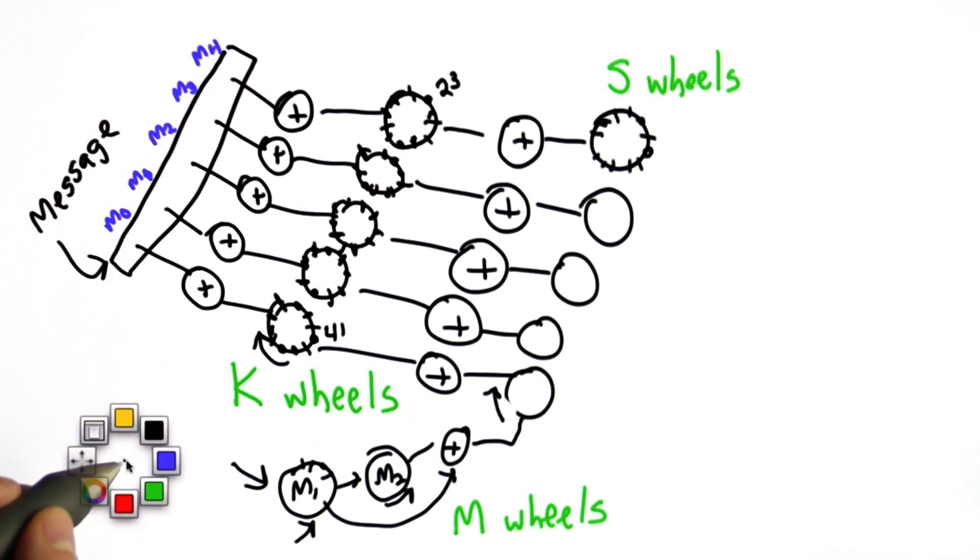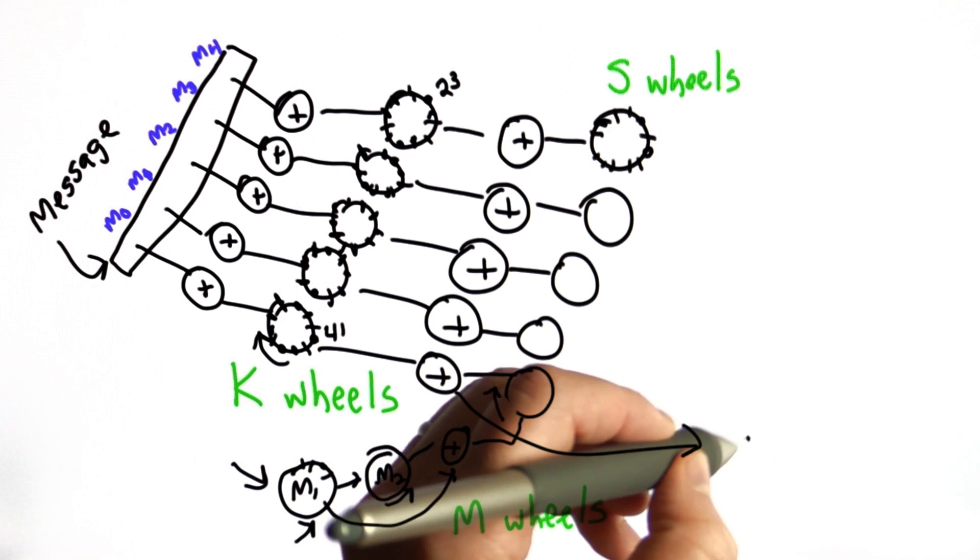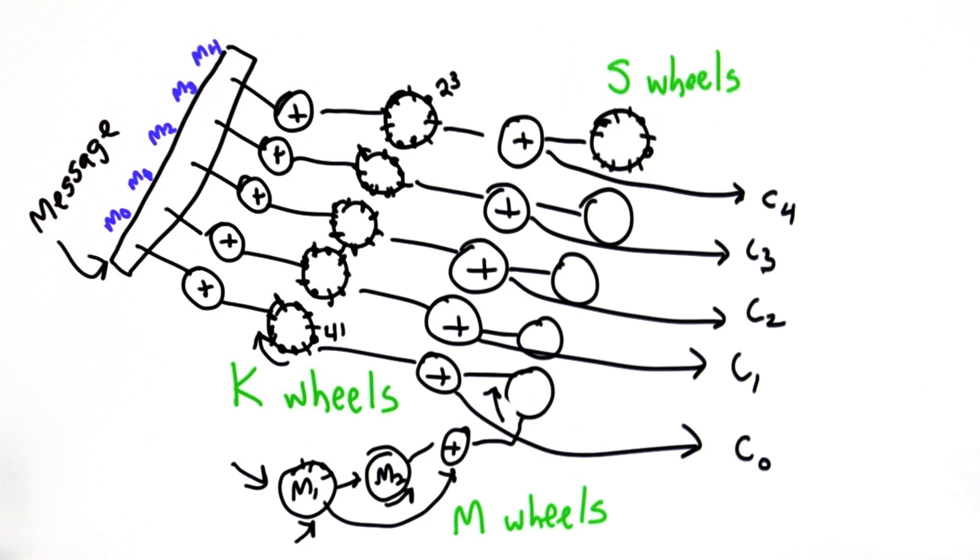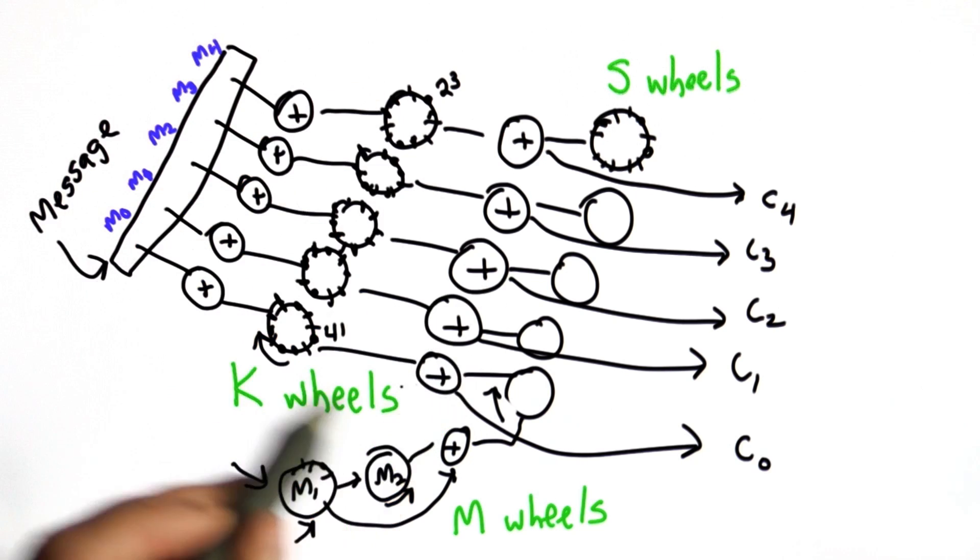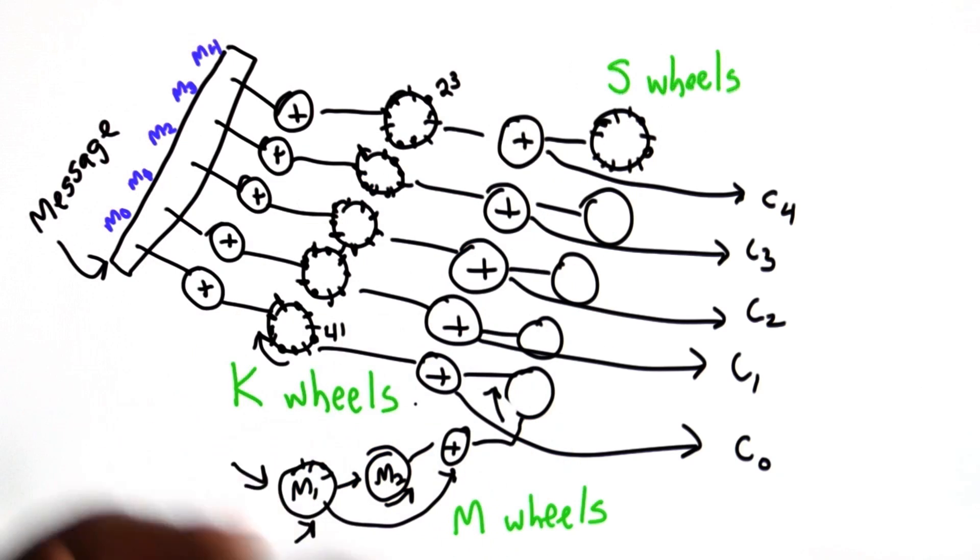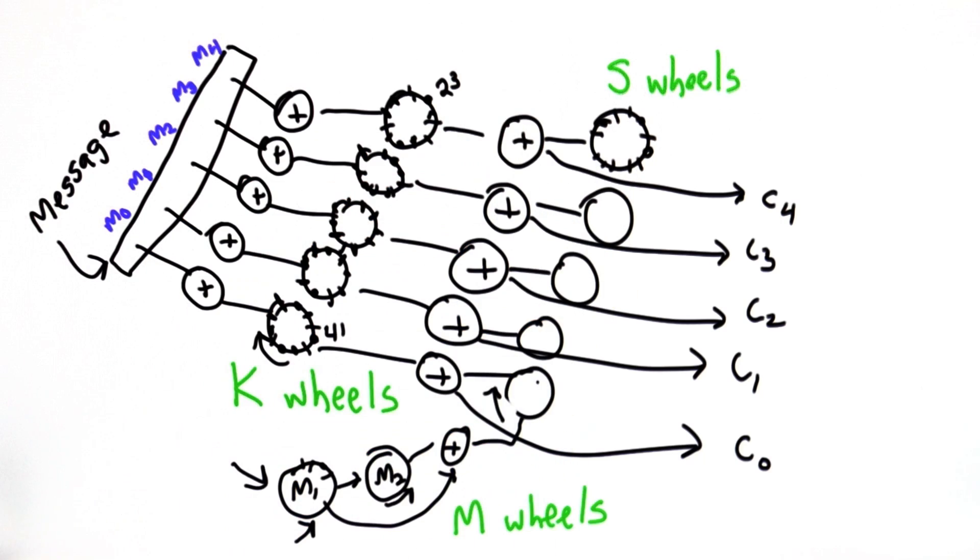The result of all these XORs is the ciphertext. This is similar to the idea behind a one-time pad. We're XORing message with key, but the key is not a perfectly random sequence. It's the key generated by this machine.